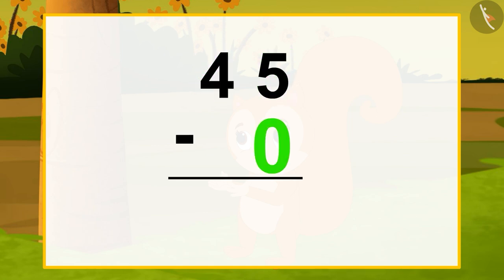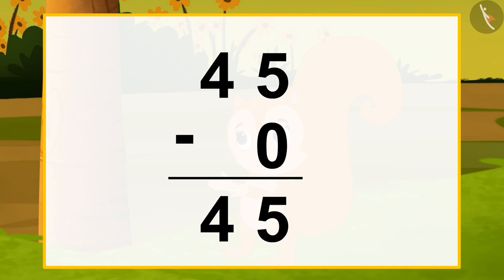Zero means nothing. And when we do not subtract anything, the answer is equal to the number from which we subtracted zero. That is, 45. So, 45 minus zero is equal to 45.